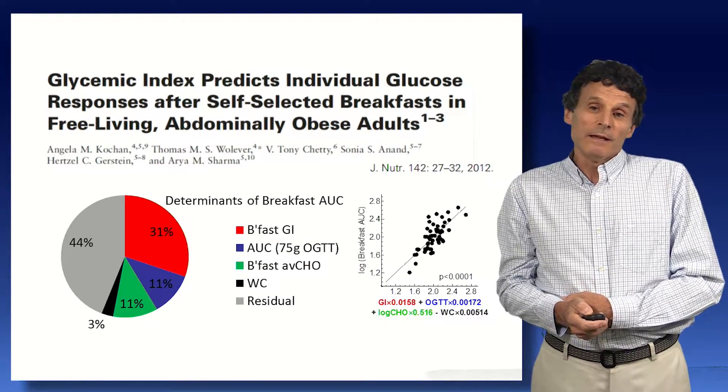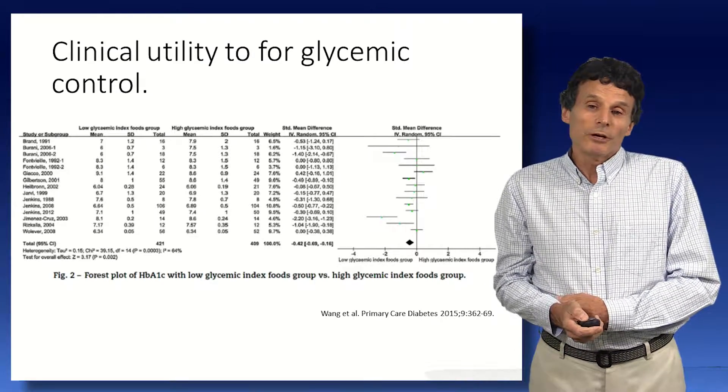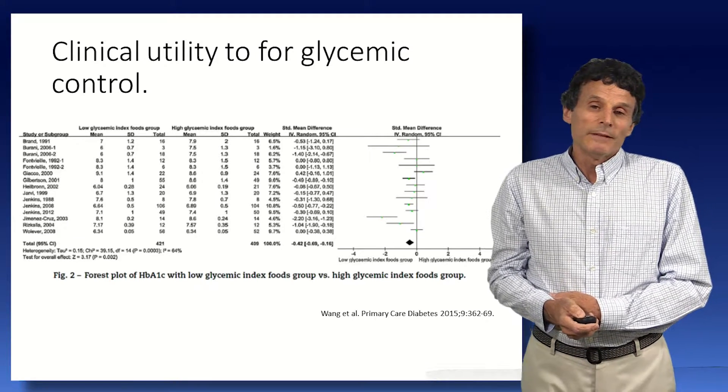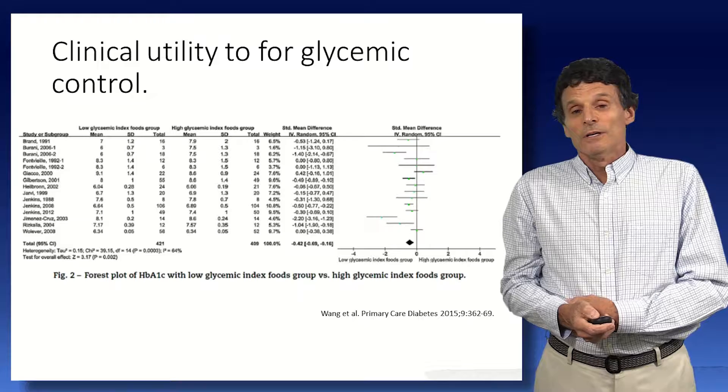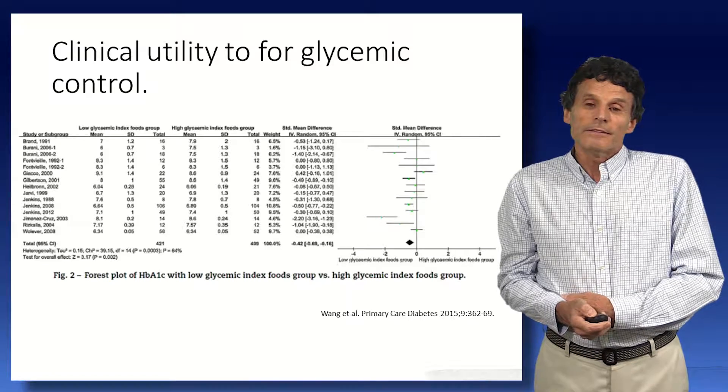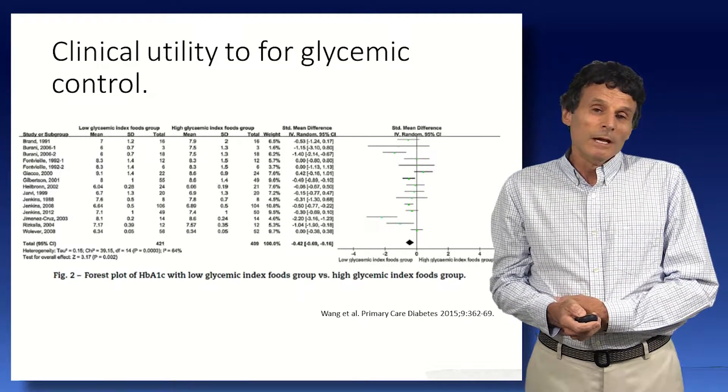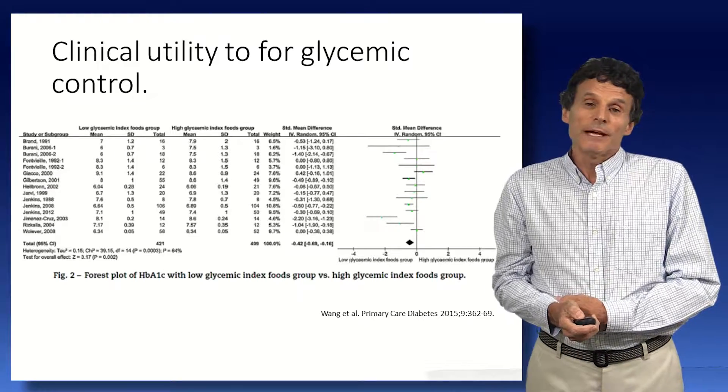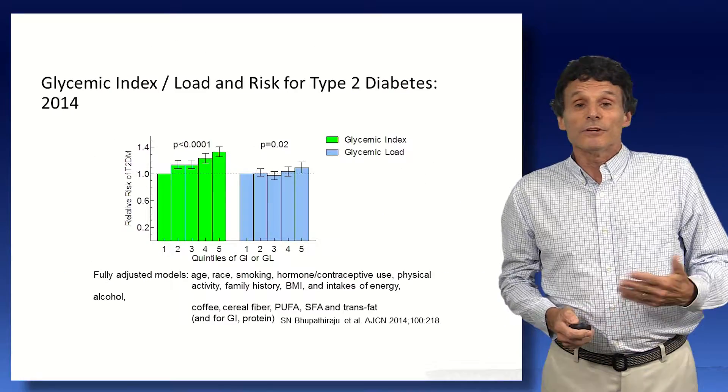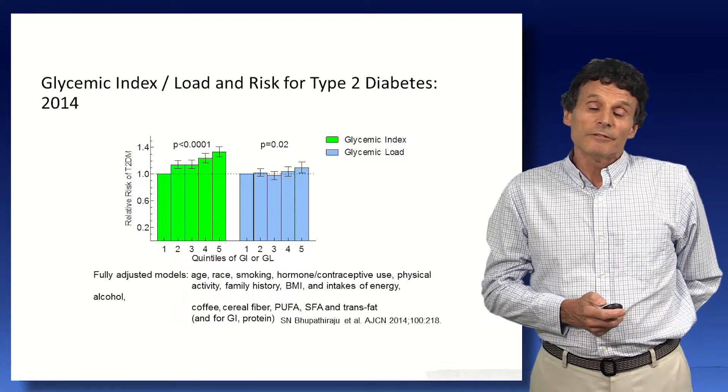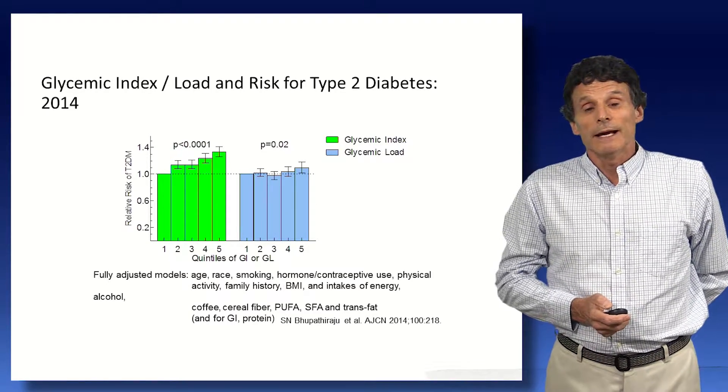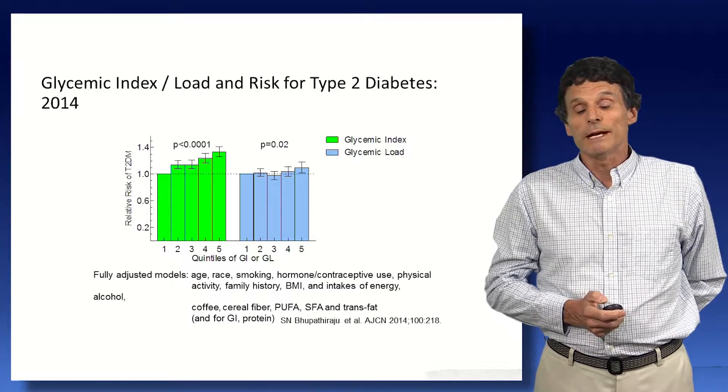So this clearly showed GI is a determinant of glucose responses in mixed meals. So it's not really surprising that exchanging high GI foods for low GI foods is clinically relevant in diabetes and improves glycemic control. And this is the most recent meta-analysis showing a significant improvement in glycemic control with low GI diet. I was not involved in this analysis at all. But GI has relevance to not just diabetes, but research has shown it has relevance to everybody.